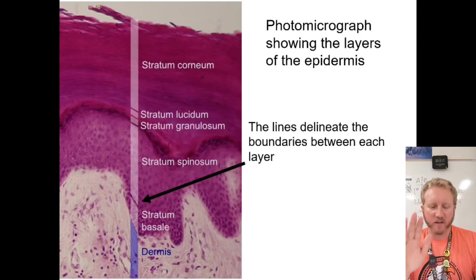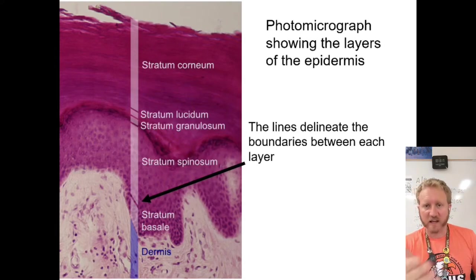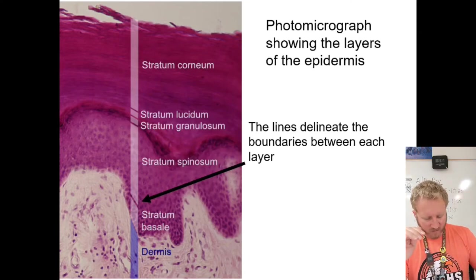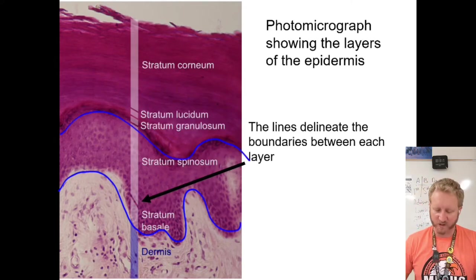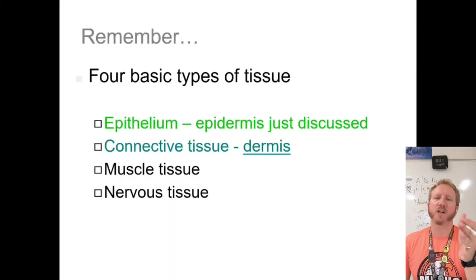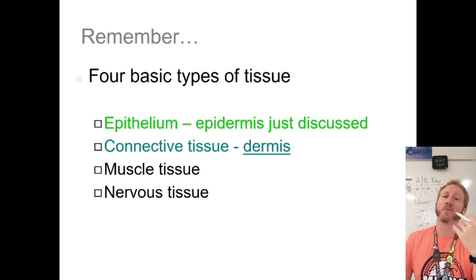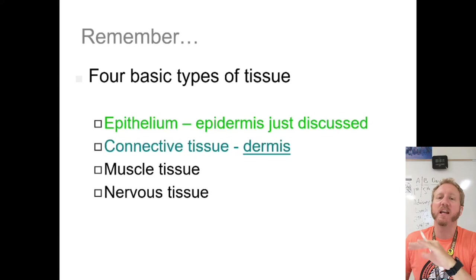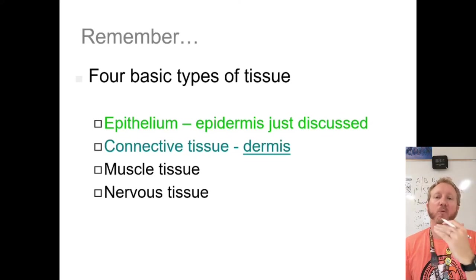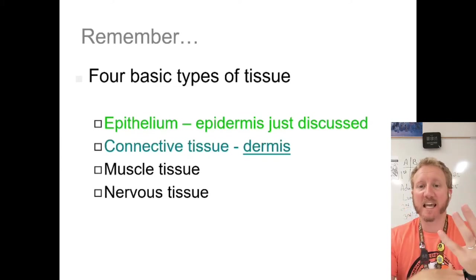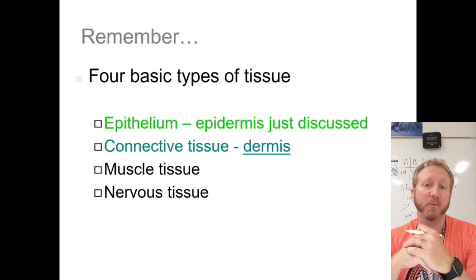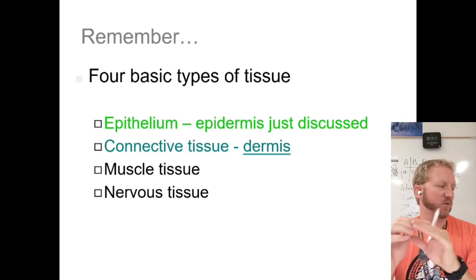Here's a photomicrograph showing the different layers. One interesting thing is that the dermis is not flat — it's wavy, with ridges. Now, skin is considered an organ because it's made up of more than one tissue type working together — that's the definition of an organ. The integumentary system is made up of epithelial tissue and connective tissue, the latter being the dermis.